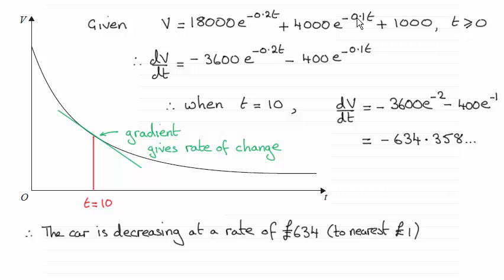Same applies here. We multiply negative 0.1 with the 4,000 to give us minus 400. And then it's e to the minus 0.1t again. Obviously the 1,000 disappears.